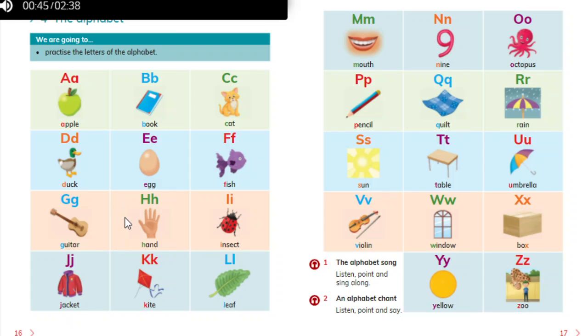H is for hand. I is for insect. J is for jacket.